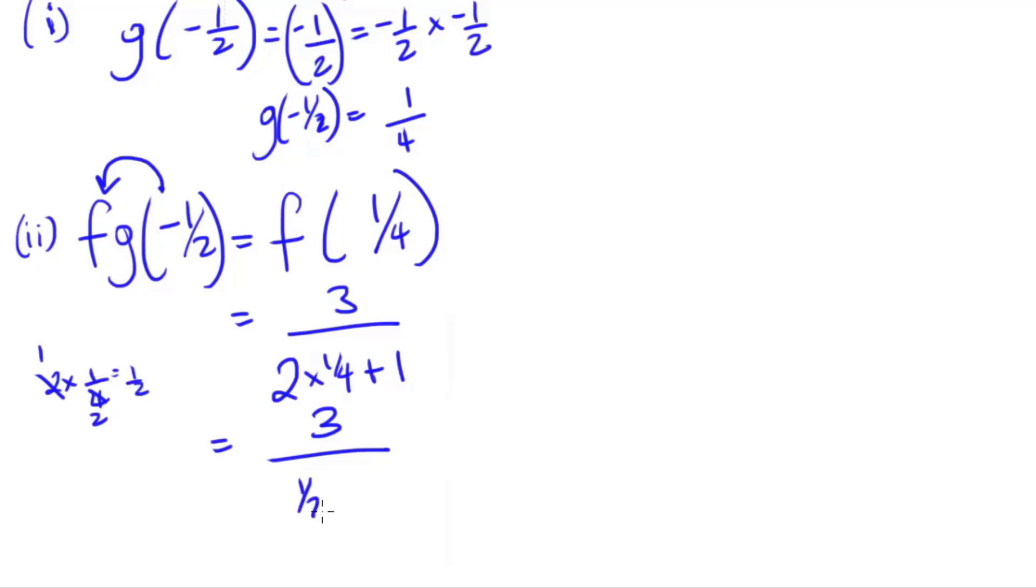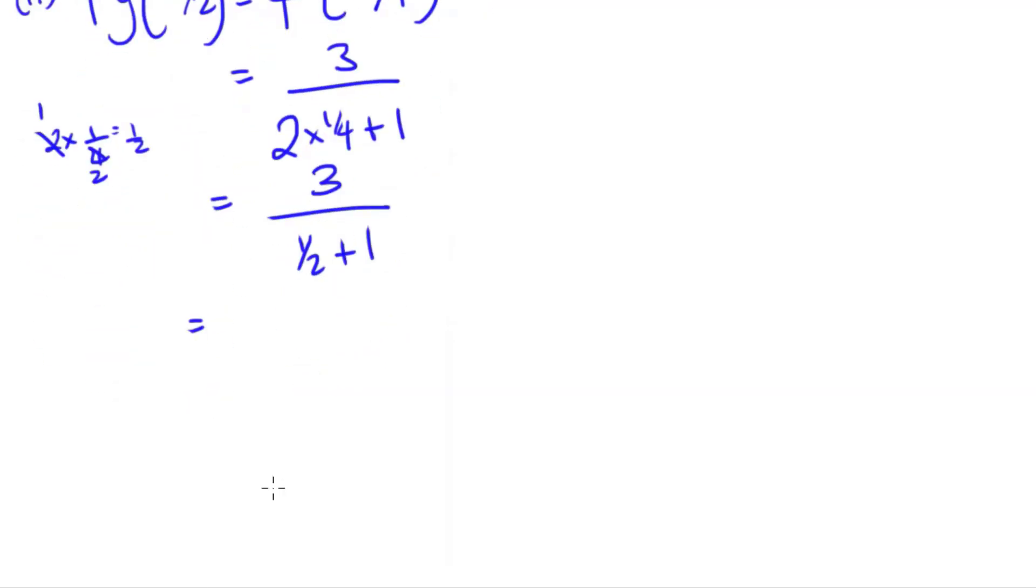So that's going to be a half plus 1. A half plus 1 is the same thing as 1 and a half or 3 over 2. And there are a lot of ways that we could proceed from here. One way we can think about is that this is 3 over 2, and what this is basically saying is that 3 is being divided by 3 over 2. If we're dividing it, that means we're going to keep the first and flip the second fraction. So that's 3 times 2 over 3. And 3 can go into 3 once each time. So that's going to just leave us with 2. So that means fg of negative 1 half is 2.